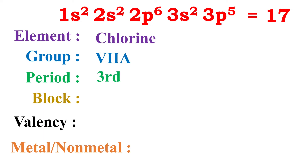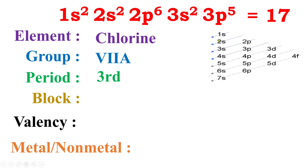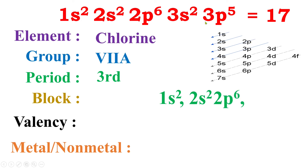Now let's find the block. In which block does it fall? For this we have to follow the Aufbau principle — the order of filling electrons in different sub-shells. Looking at the 17 electrons: first we fill the 1s sub-shell with 2 electrons (S sub-shell can hold only 2). Then 2s sub-shell takes 2 more. Then 2p sub-shell can hold 6 electrons, so we put 6 electrons there. This matches the given configuration.